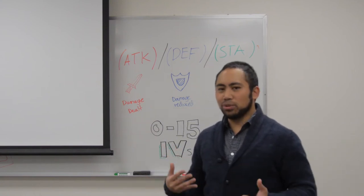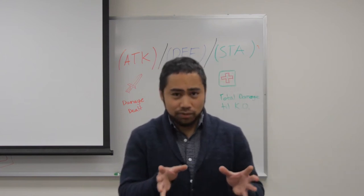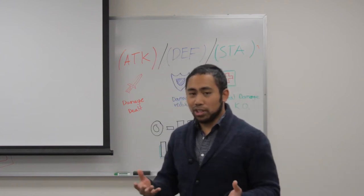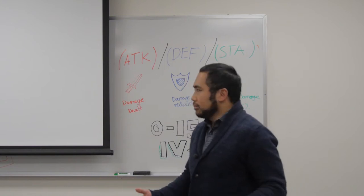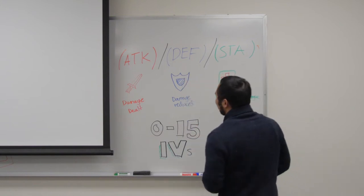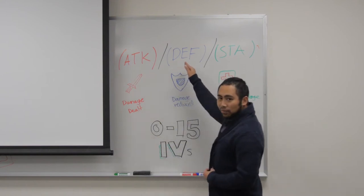IVs stand for individual values. Each Pokemon is born with a set of three distinct values that cannot be changed. Maybe you're born with it. Maybe it's Maple Leaf. But these flavors, they're born with three distinct stats: Attack, Defense, and Stamina.